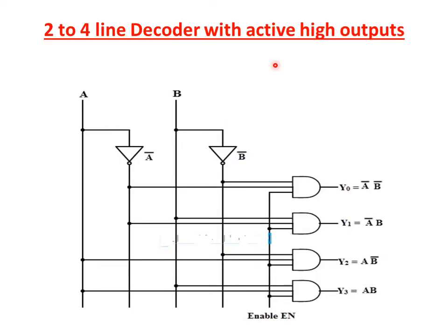This is the logic diagram for the 2-to-4 line decoder with active high outputs. The enable signal is applied, and the 2 input lines A and B have A-bar and B-bar obtained from inverter outputs. The minterms are implemented by AND gates. So the output Y0 is A-bar B-bar, Y1 is A-bar B, Y2 is A B-bar, and Y3 is A B. This way we can draw the logic diagram for the decoder.